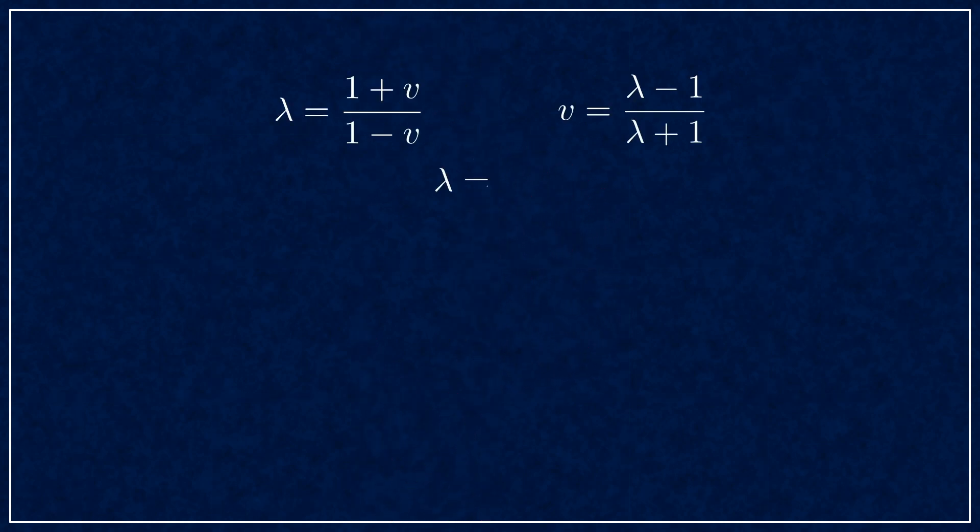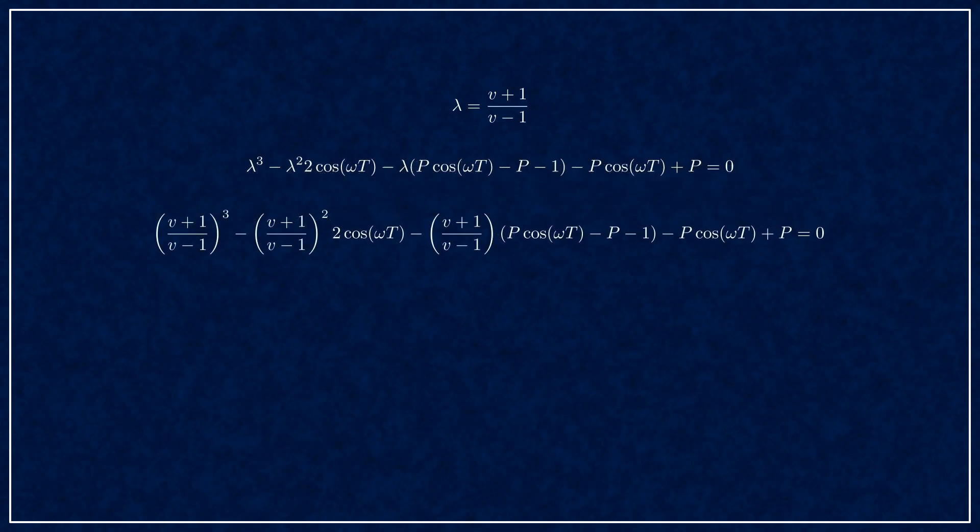Let's prove it quickly. If lambda is on the unit circle, then it can be described as e to the j phi. Then v is this expression. And after multiplying and dividing by e to the minus j phi over 2, you get complex conjugates. And adding and subtracting complex conjugates like this leads to the elimination of the real part.